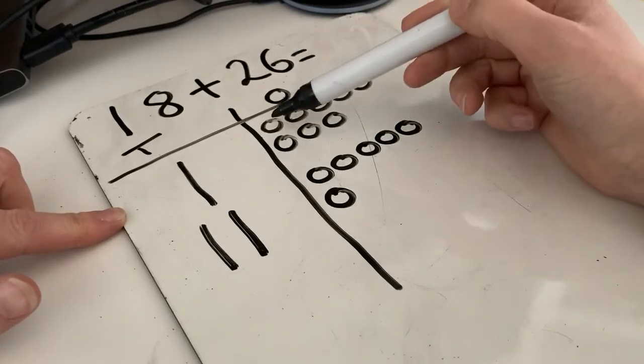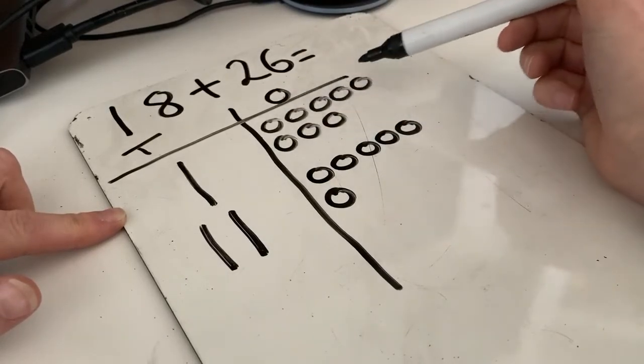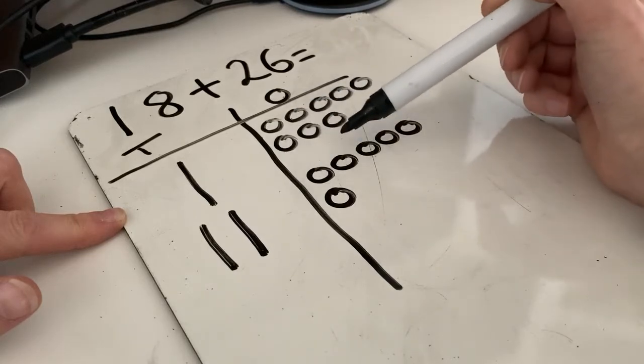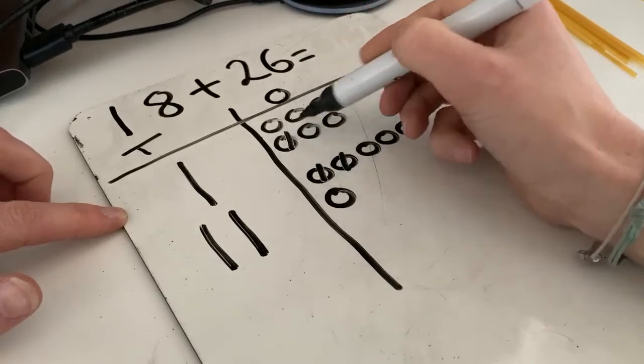So let's count them up. One, two, three, four, five, six, seven, eight, nine, ten. Oh, we've got ten already, so let's cross those off.